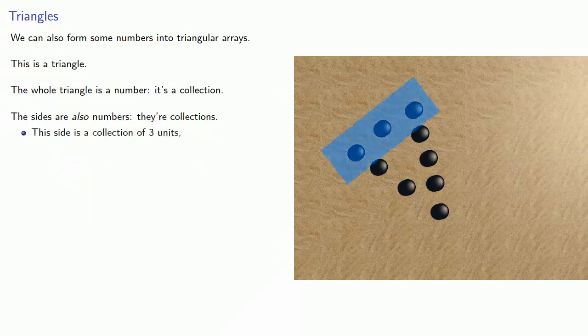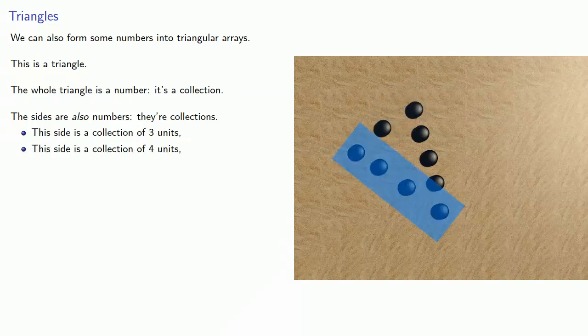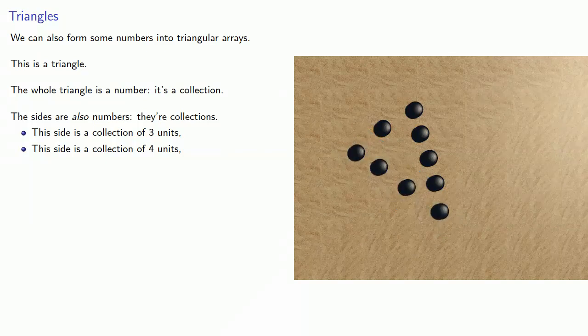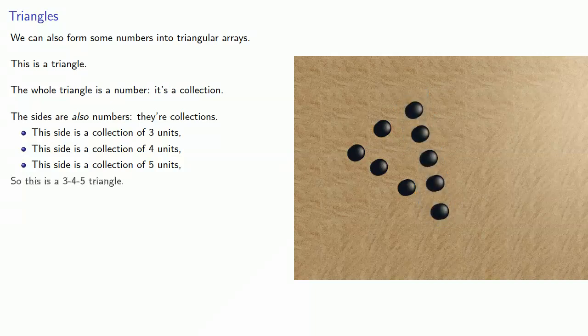This side is a collection of three units. We can say this side is three. Likewise, this side is a collection of four units. This side is four. This side is a collection of five units. This side is five. And so this is a three, four, five triangle.